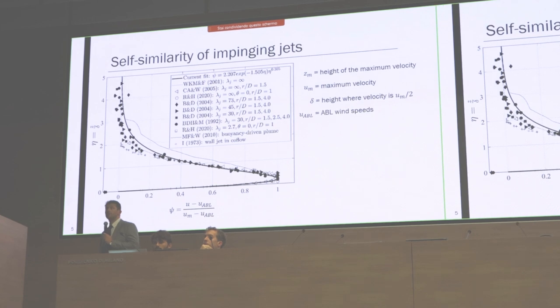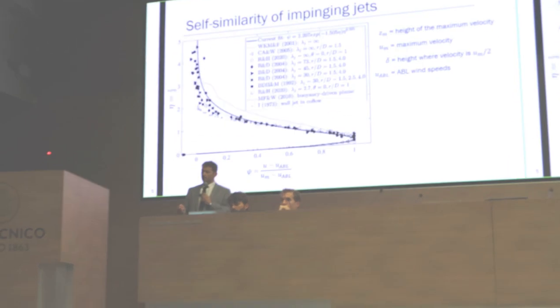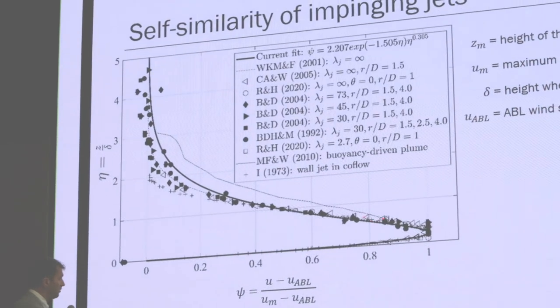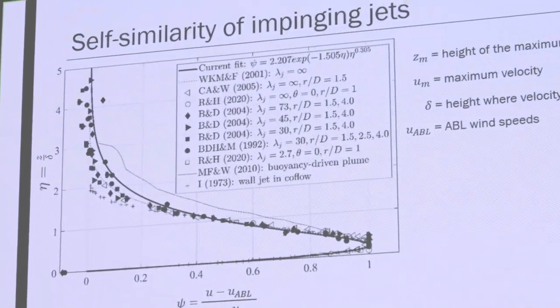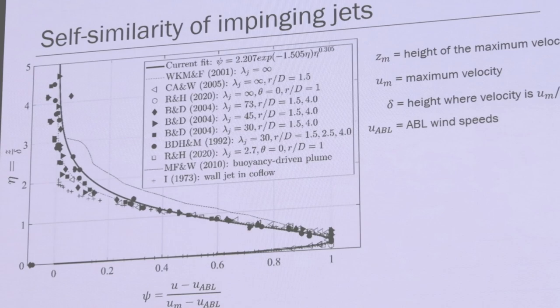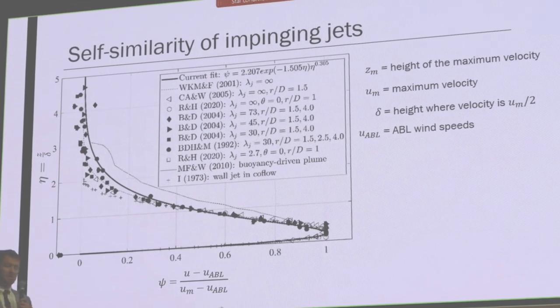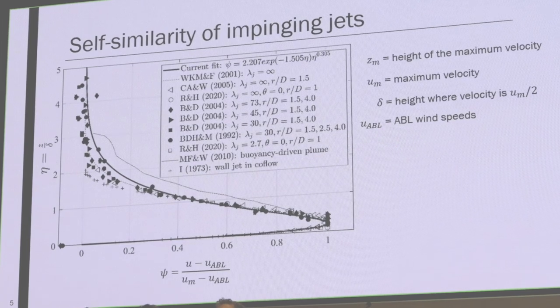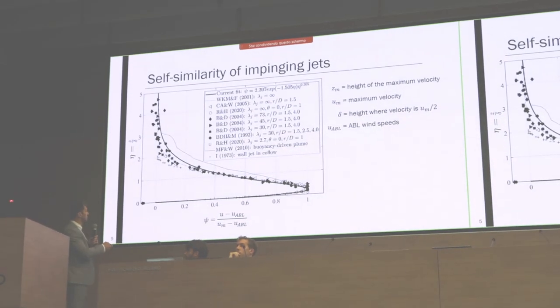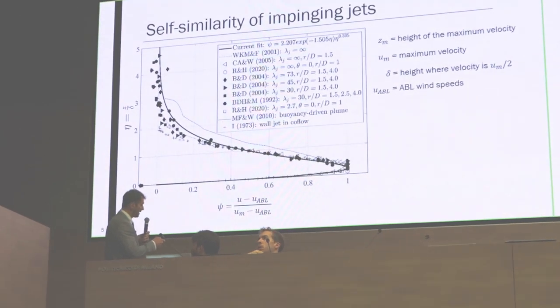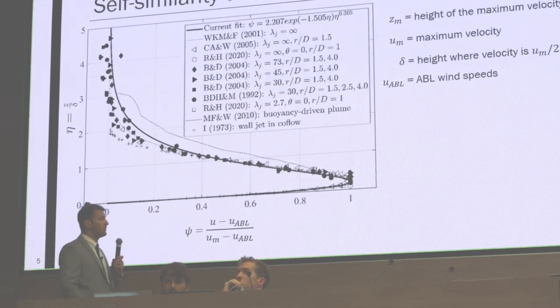There's a lot of research suggesting that impinging jets are good substitutes for downbursts in experimental settings. In this busy figure you see a collection of many impinging jet measurements in the presence of ABL winds or cross flow and without. Both impinging jets issuing into calm environment and cross flow can be collapsed to the same line if we use this normalization in the X and Y axis, where UABL is ABL wind velocity and UM is velocity at the height of maximum velocity in the outflow.